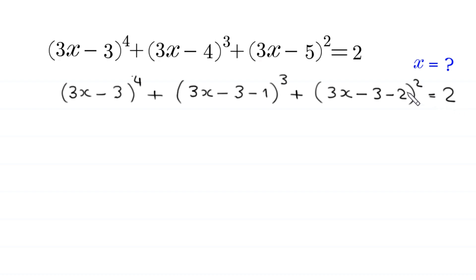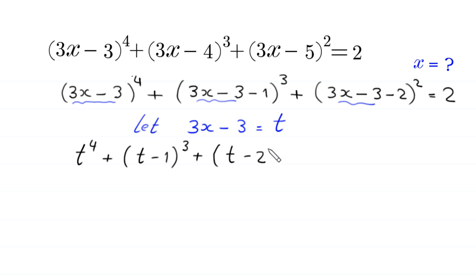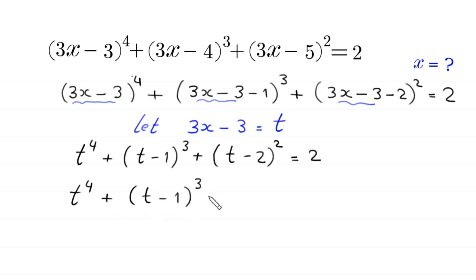We suppose that 3x-3 is equal to t. So the equation becomes t⁴ + (t-1)³ + (t-2)² = 2. We move this 2 to the left-hand side, so this becomes t⁴ + (t-1)³ + (t-2)² - 2 = 0. The -2 can be written as -1 - 1.